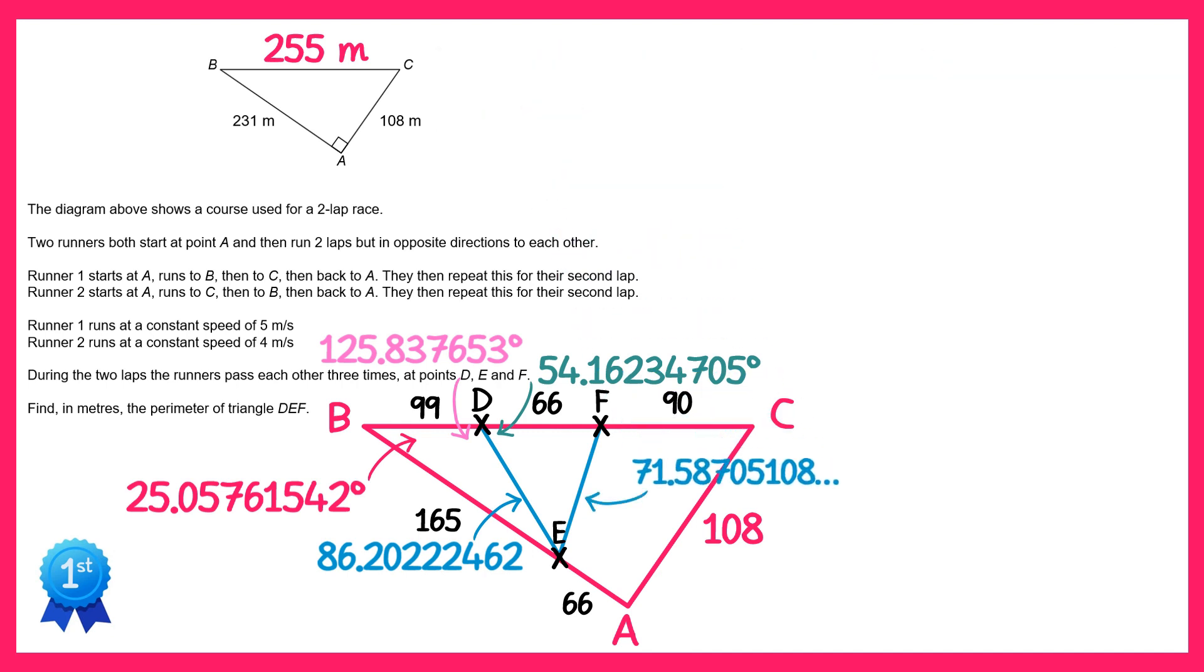So we can add that to the diagram and finally to find the perimeter of this triangle DEF we add up all of those sides so we've got the side we just found plus the 86.2 and so on from earlier plus 66 and this gives you the total 223.7893 metres.